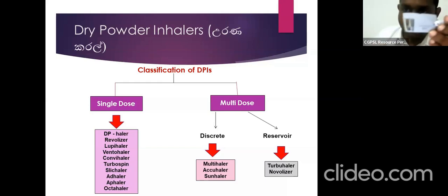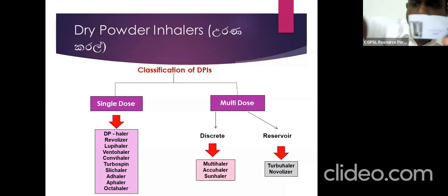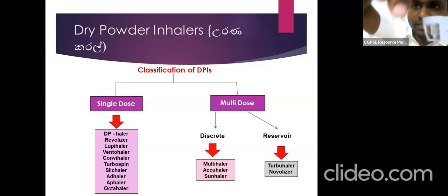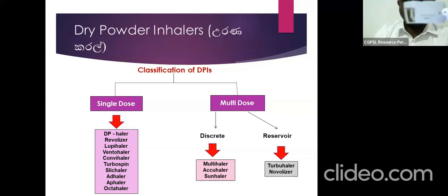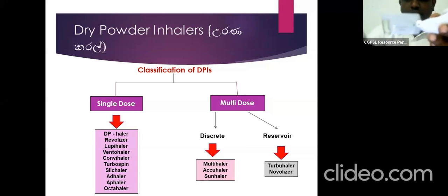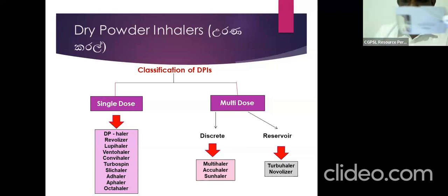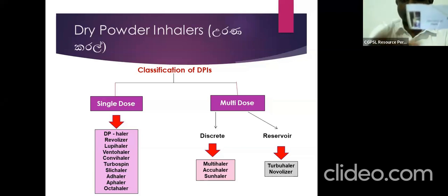If the device is see-through, you can check that the capsule is inside. You always place the transparent side of the capsule downward. You open the device fully until the two arrows meet together. Then you put the capsule inside with the see-through side down. You can see the capsule inside. Then you close the device.